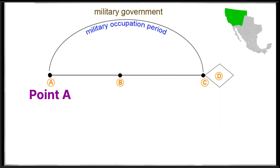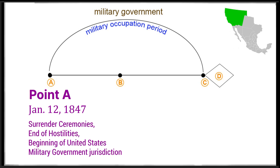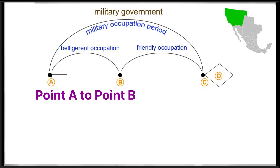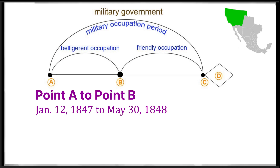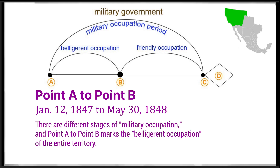Point A: January 12, 1847 — Surrender Ceremonies, End of Hostilities, Beginning of United States Military Government Jurisdiction. Point A to Point B: January 12, 1847 to May 30, 1848. There are different stages of military occupation, and Point A to Point B marks the belligerent occupation of the entire territory.